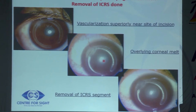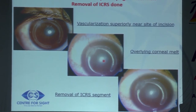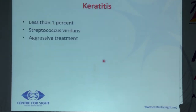In a case with overlying stromal melt and vascularization not responding to steroids, the intacs segment was removed. The inferior segment was melted, and since the superior was only a supporting segment, it was removed too. Uniquely, after removal at one year, the flattening did not rebound — likely because scarring and tissue modulation around the channel caused some degree of permanent change and the patient continued to do well.